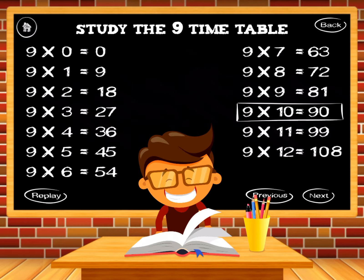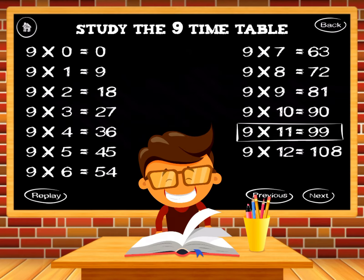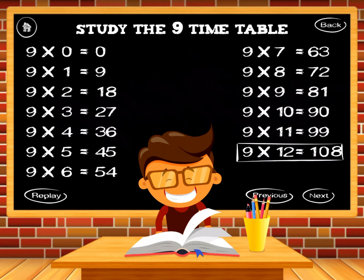9 times 10 equals 90. 9 times 11 equals 99. 9 times 12 equals 108.